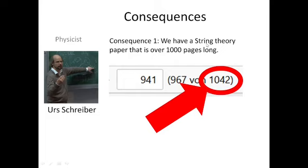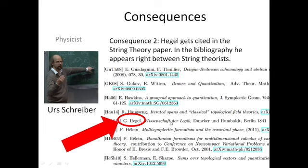So what are the consequences? The first consequence is we now have a string theory paper that is over 1000 pages long because it's a very long and complicated paper that Schreiber wrote there. Second consequence, we have a string theory paper where Hegel gets cited in the bibliography. Here I just cut out a short part of the bibliography of the paper and we can see people like Witten, Branes and Quantization, we see Hawking's Euclidean Approach to Quantization, and then suddenly there's just Hegel's Science of Logic in there.